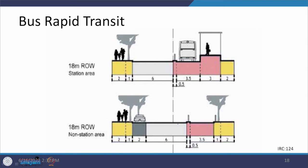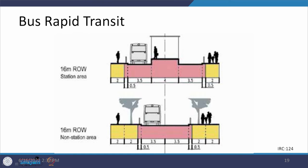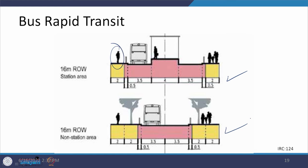For an 18-meter ROW, a one-side BRT lane is provided along with the station. For a 16-meter ROW, the entire width is dedicated to BRT only, with pedestrian facilities also provided since there are no lanes dedicated to motorized vehicles. These are the various cross sections depending on the available ROW.